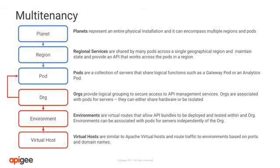Planets are subdivided into regions. A region is typically represented by a data center or cloud region. Pods represent a logical grouping of components by function. We use pods to group components together for configuration and management. Apigee Edge uses three pods: gateway, central, and analytics.